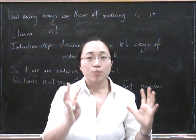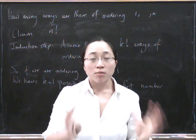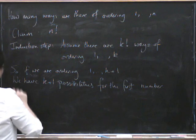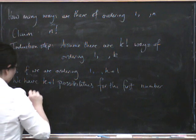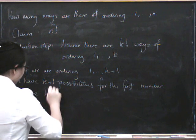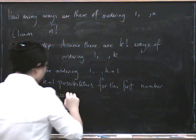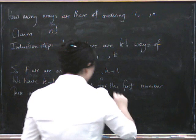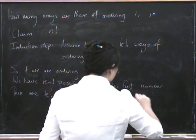And now we've got k more numbers we have to put in an order. But we know how many ways there are of doing that because there are k factorial ways of ordering the remaining numbers.